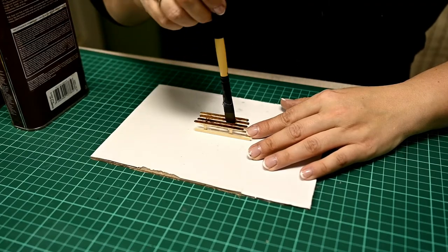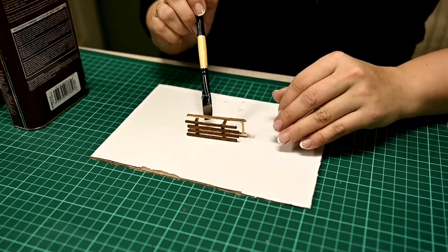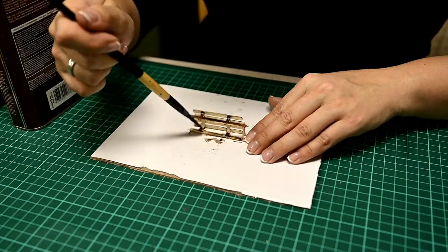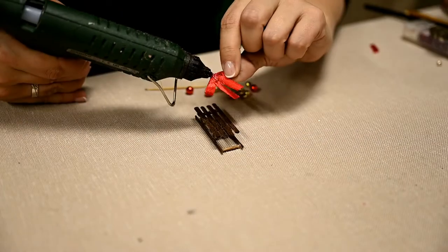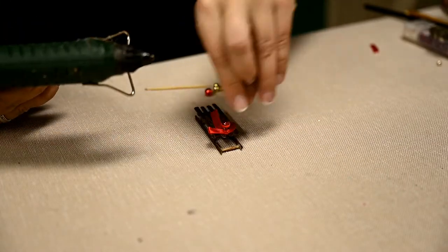I'm staining the sledge in dark brown and decorating it with a red bow and some beads.